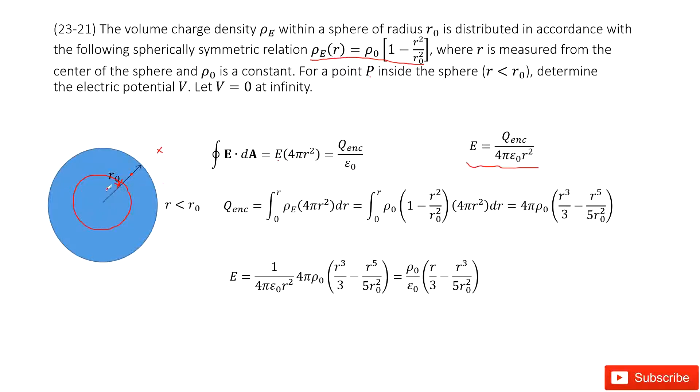Next step, we need to find the enclosed charge in this case. So we use the integral. Charge density times its volume, so this is 4πR² times dR, and integral from 0 to R.